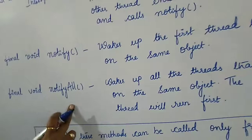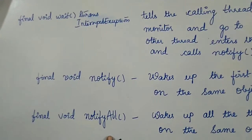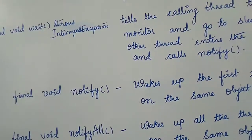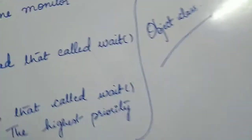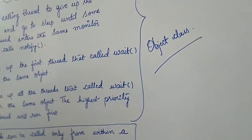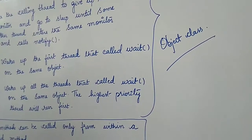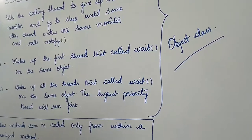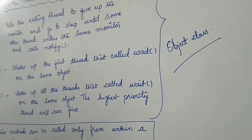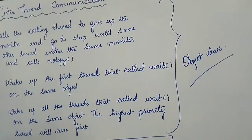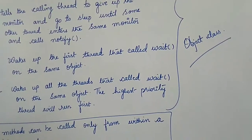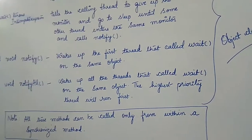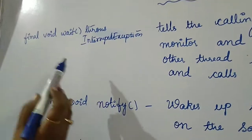These three methods — wait, notify, and notifyAll — are used for inter-thread communication (ITC). This is a very important interview question and MCQ: in which class are these three methods? Students generally get confused thinking they are in the Thread class. No — these three are in the Object class, because they need to be available to other classes as well.